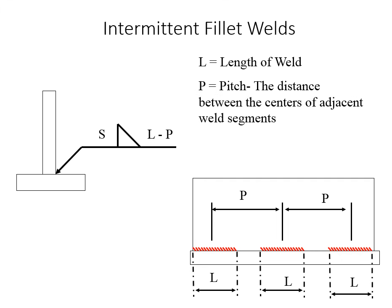For intermittent fillet welds, we have dimension S — the size of the fillet weld — and now we introduce L and P, which are length and pitch. Length is the length of the weld segment. The pitch is the distance between the center lines of adjacent segments. The nomenclature remains consistent: size is to the left of the weld symbol, the first number to the right is the length of the weld, and the second number to the far right is the pitch.